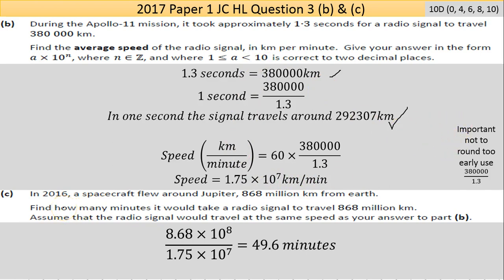The next part says: In 2016, a spacecraft flew around Jupiter, 868 million kilometers from Earth. Find how many minutes it would take a radio signal to travel that distance. Assume that the radio signal would travel at the same speed as your answer to part (b). Whatever answer you got there, even if you were stuck and had no notion what to do and declared an answer—whatever answer you declare there, even if it's wrong in part (b), will be accepted as fully correct in part (c).